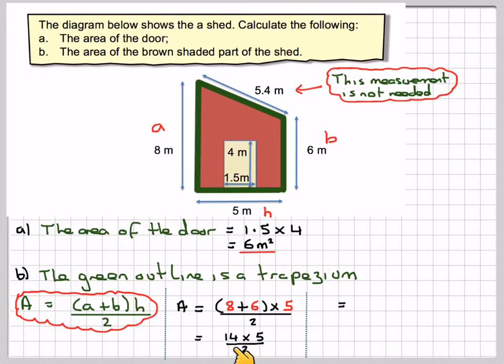Now, 2 goes into 2 once, and into 14, 7 times. So all we need to do is 7 times 5, which is 35 metres squared.